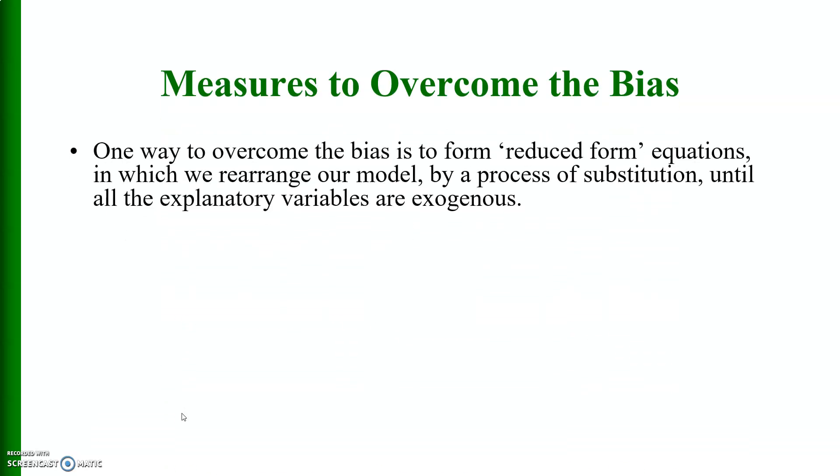There are certain measures which can be used to overcome the bias. One way to overcome the simultaneous equation bias is to form reduced form equations in which we rearrange our model by a process of substitution until all the explanatory variables are exogenous. We will discuss this in detail a little bit later.